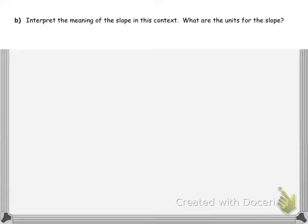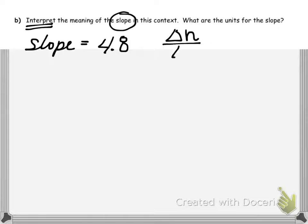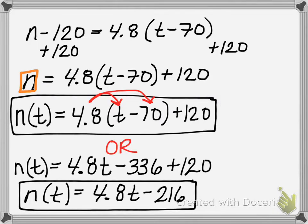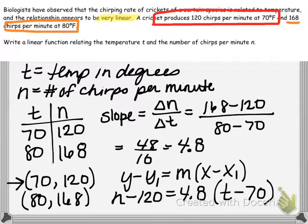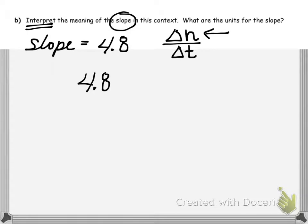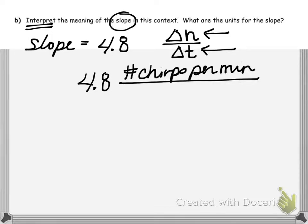The next part of this problem asks us to interpret the meaning of the slope in this context, including the units. From earlier, we determined that the slope was 4.8, and that was the change in N divided by the change in T. Looking at our units in the numerator, N was the number of chirps per minute. The denominator was T, which was temperature measured in degrees. So the unit of the slope is chirps per minute per degree.